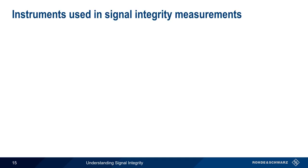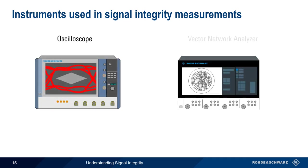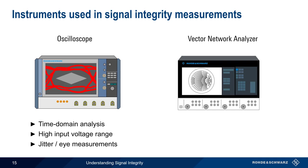The two primary test and measurement instruments used in signal integrity are oscilloscopes and vector network analyzers, or VNAs. Oscilloscopes are primarily used for time-domain analysis of waveforms. Scopes usually have a relatively high input voltage range, and are used to measure jitter and so-called eye diagrams, which we'll look at on the next slide.